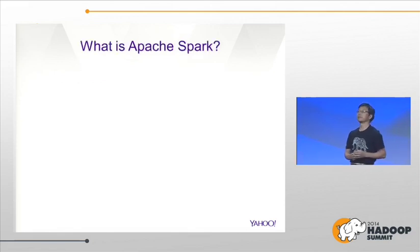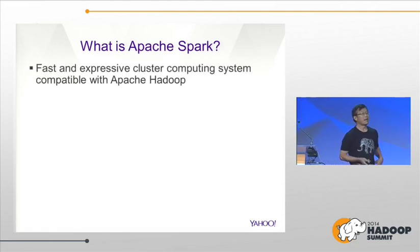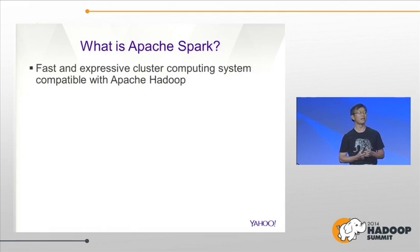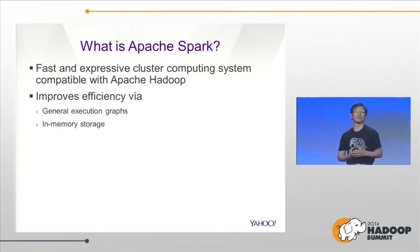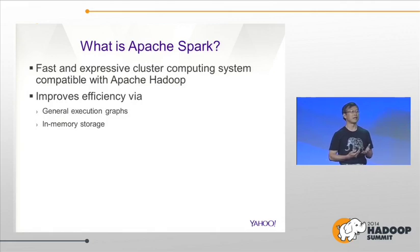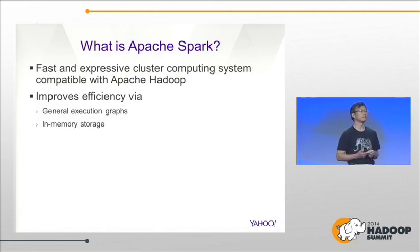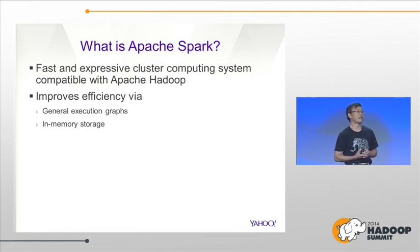So what is Spark anyway? Spark is a distributed computing system that is compatible with Hadoop, and it comes with several key advantages. One is speed and the second is expressiveness. From the speed point of view, the two main drivers are: first, it is designed for a more general execution graph compared with the limited MapReduce model; and second, it comes with built-in support for in-memory storage, so you can avoid unnecessary IO operations when dealing with big data sets.